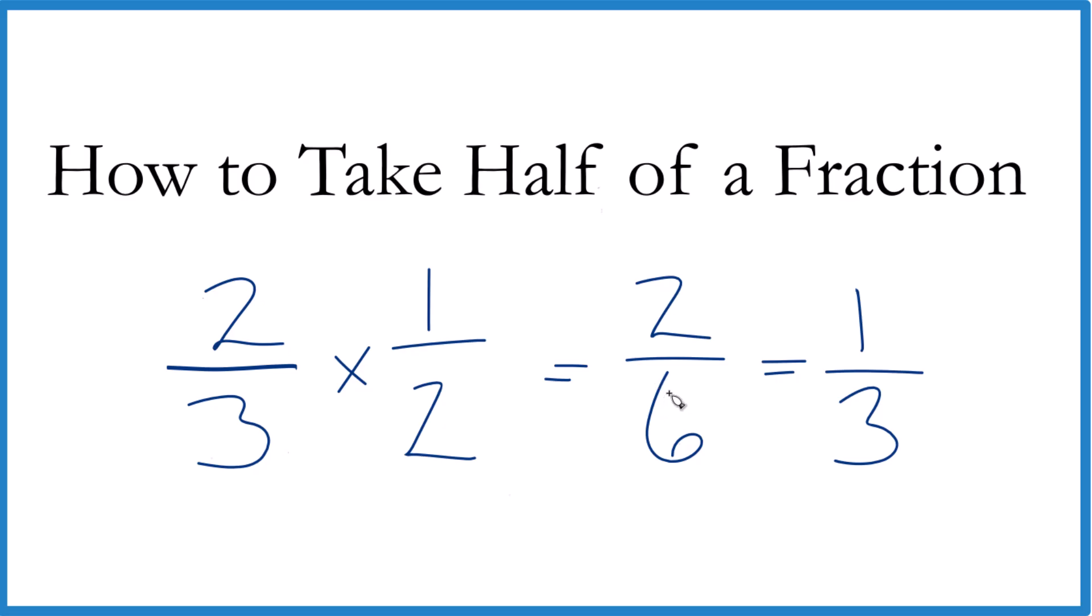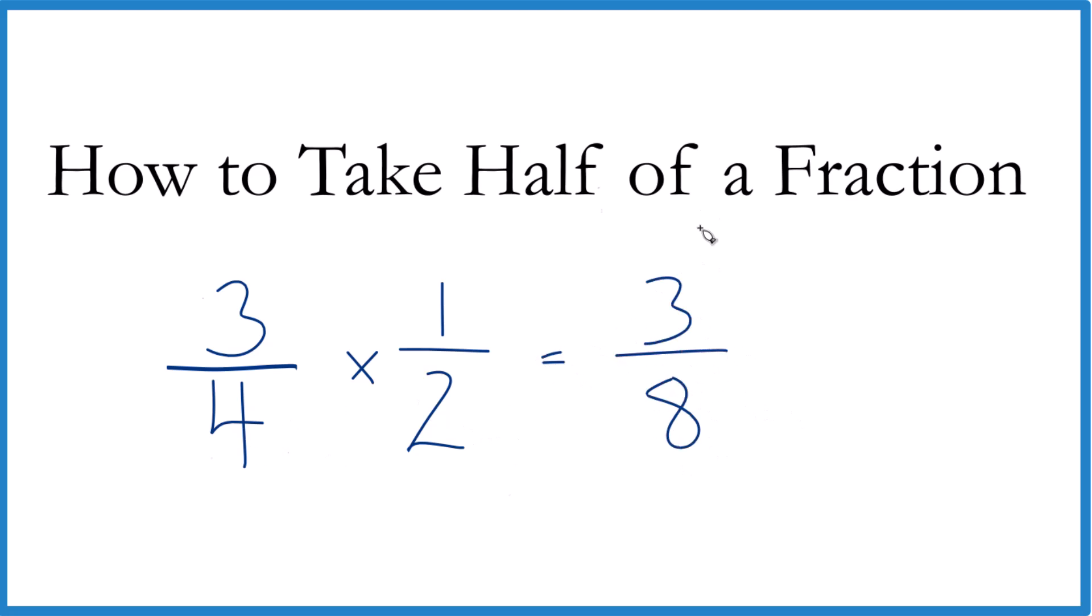So sometimes you need to simplify. Let's try another one. Pause and take half of three-fourths. We multiply by one-half. Three times one, that equals three. Four times two is eight. We end up with three-eighths.